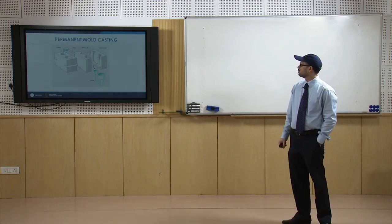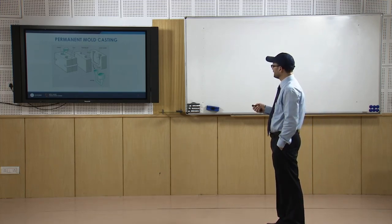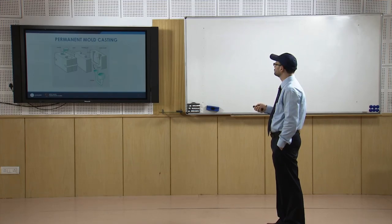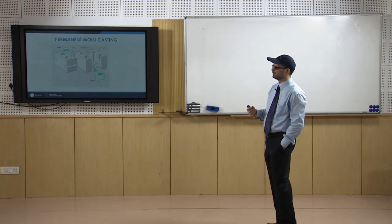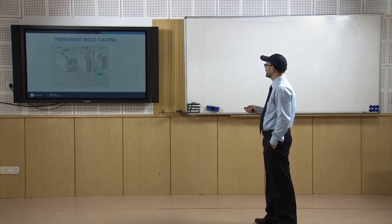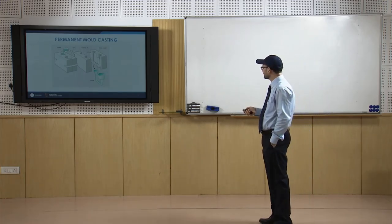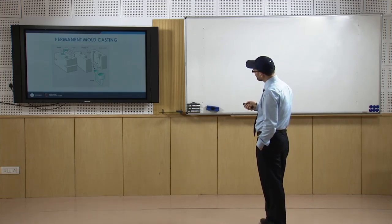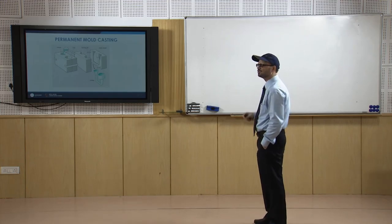The figure shows how a permanent mold casting looks. You have two dies with a cavity cut into them. There is a pouring cup and a riser. Liquid metal is poured through the pouring cup, fills the cavity, and rises into the riser. Locating pins fix the two halves together. Once the metal solidifies, the two halves are moved apart and the casting is taken out — this is gravity die casting.